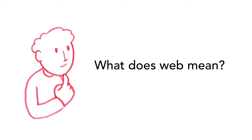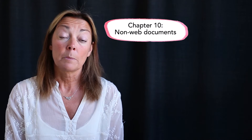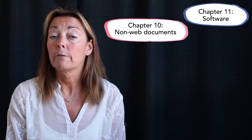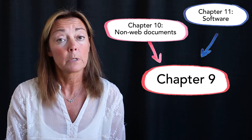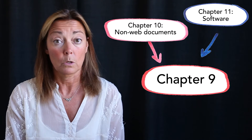You may ask yourself what the web means in this context. In the EN standard, the web includes websites, web applications, intranet, extranet, web-based apps and much more. But the requirements in this chapter are also relevant if you have other types of software not shown in a web browser, or if you have a mobile app or digital documents, like PDFs for example. Chapter 10 covers documents and chapter 11 has to do with other software, but both of these chapters refer to the requirements in chapter 9. So this video is a good place to start.